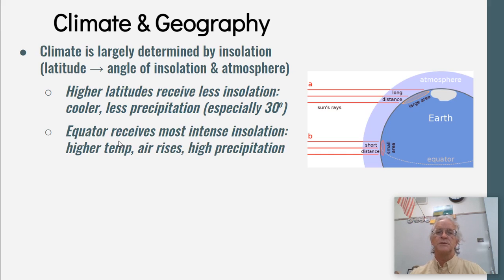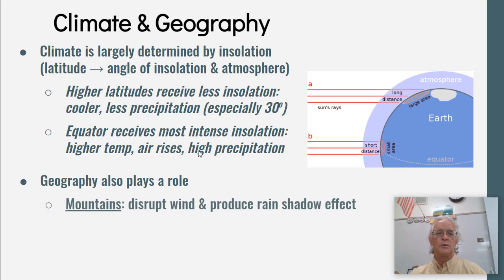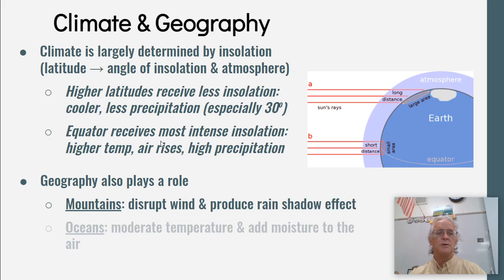The equator receives the most intense insolation, therefore it has higher temperatures, the air rises, and it has a high amount of precipitation. Geography also plays a role. Mountains disrupt wind and produce a rain shadow effect, which we'll learn about in a minute. Oceans moderate temperature and add moisture to the air.